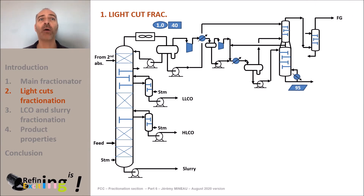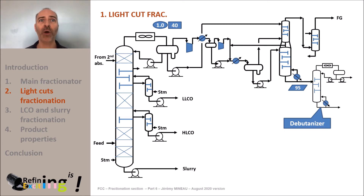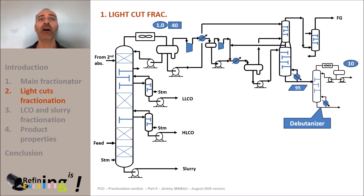The 95 tons per hour leaving the stripper bottoms is routed to a new column called the debutanizer. The objective of this new column is to separate the LPG from the gasoline. This column is typically equipped with 30 to 40 trays and operates at a pressure of around 9 bars. It is equipped, as any distillation column, with a condenser, a reflux, and a reboiler.